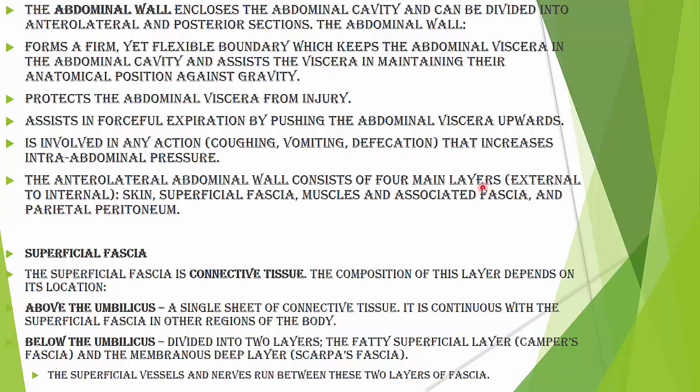Abdominal wall abdominal cavity ko surround kerta hai jis ko hum doh parts mein divide ker sakti hai. Eek ko hum anterior lateral aur dusre ko posterior section keheti hai. Is abdominal wall ka function hota hai ki ye abdominal viscera ko apne anatomical position mein rakhe aur abdominal viscera ko protect karay.